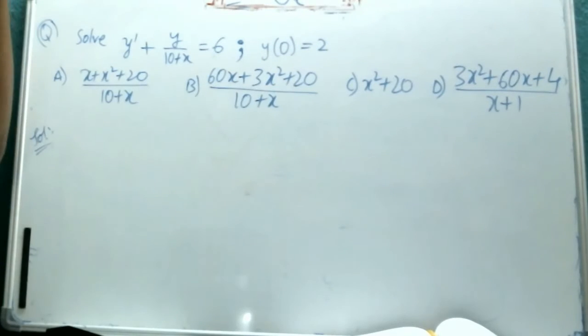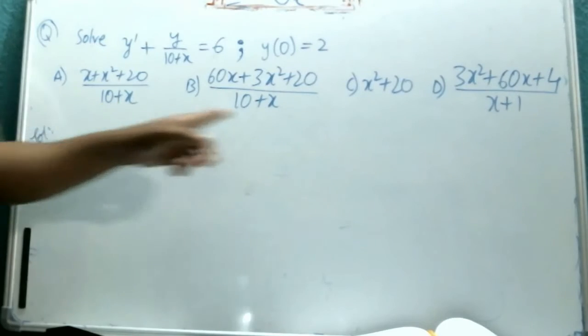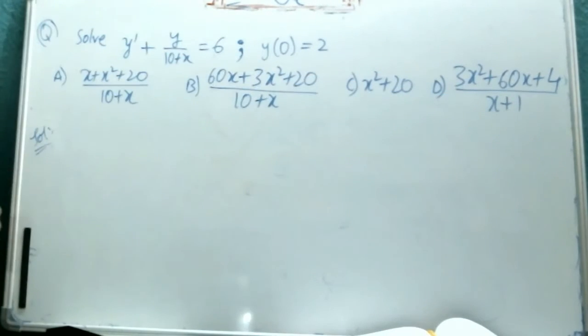But we have to check four options. If we are lucky, then first one itself will be the answer. But if we are unlucky, if fourth one is the answer, then we have to check one, two, three, and four options. It will take lot of time. Better than that is, you directly solve it. When solution is easy, this is actually easier problem.